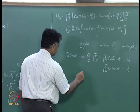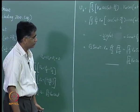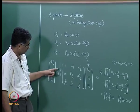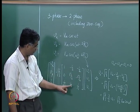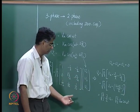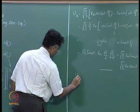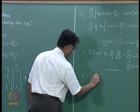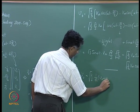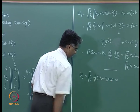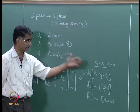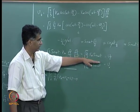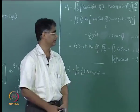Before proceeding, note that V0 = sqrt(2/3) × (1/√2)(VA + VB + VC). Since VA + VB + VC = 0 for balanced excitation, V0 = 0. So when a three-phase machine is excited with balanced excitation the zero-sequence component vanishes, leaving only the Vα and Vβ terms — that is why we call it a two-phase equation.